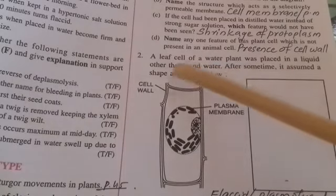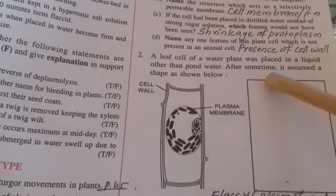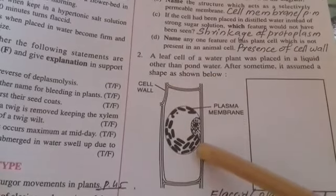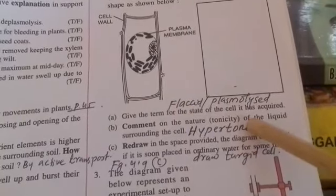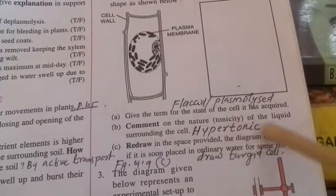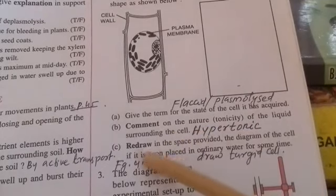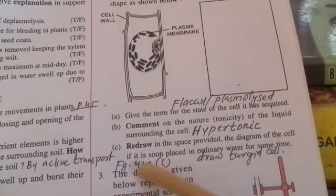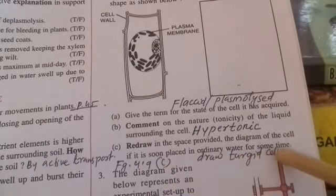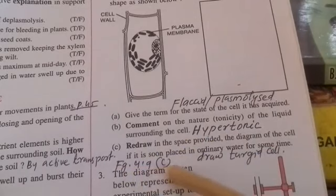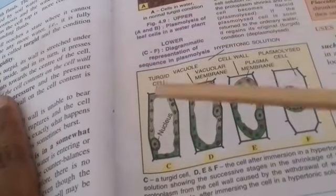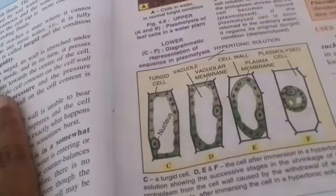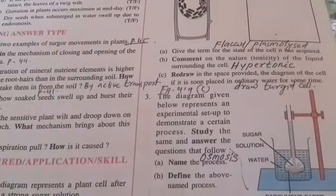Next: a leaf cell of a water plant was placed in a liquid other than pond water and assumed a shape as shown. What is the state? — flaccid or plasmolyzed. What is the tonicity of the surrounding liquid? — hypertonic. Redraw the diagram of the cell if it is soon placed in ordinary water — draw figure 4.9c from the textbook, showing a fully turgid cell.